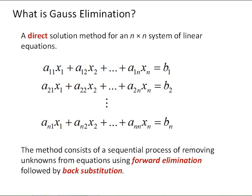So what is Gauss elimination? It's a direct solution method for an n-by-n system of linear equations. By direct, I mean we're making no approximations to develop this method — that's in contrast to the iterative methods for root problems in the previous algorithms we looked at. The method consists of a sequential process of removing unknowns from the equations in the system using forward elimination followed by back substitution.